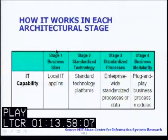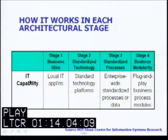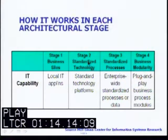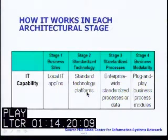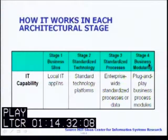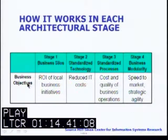Looking at IT capability for each of the stages: stage one, business silos, is a focus on local IT applications; stage two, standardized technology, is a focus on standard technology platforms; stage three, standardized processes, focuses on enterprise-wide standardized processes or data; and stage four, business modularity, focuses on plug-and-play business process modules.